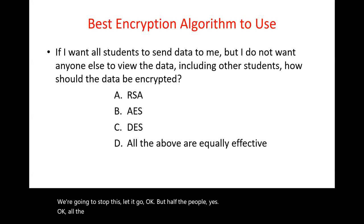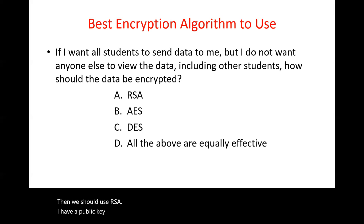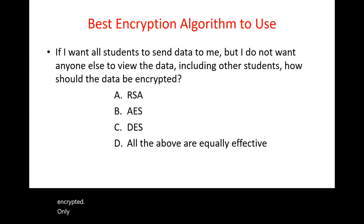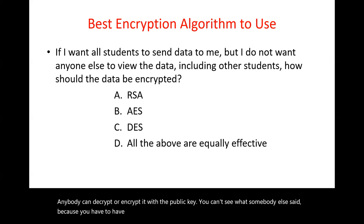All the students want to send data to the professor and he doesn't want anybody else to see it. In that scenario, we should use RSA. The professor has a public key; everybody uses that public key to encrypt their data and send it to him. Since it's encrypted, only he can decrypt it with his private key. Anybody can encrypt with the public key, but you can't see what somebody else sent because you'd need the private key to decrypt. The answer is A, RSA.